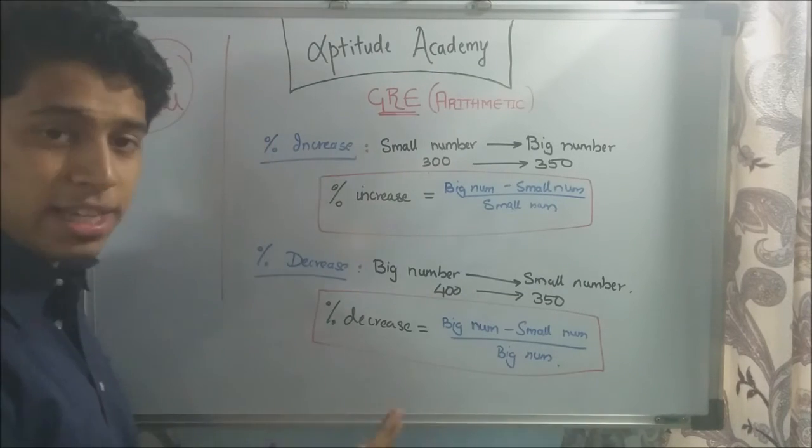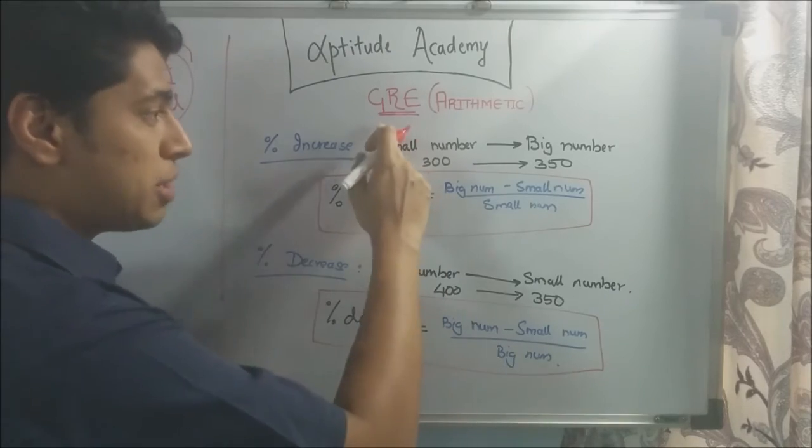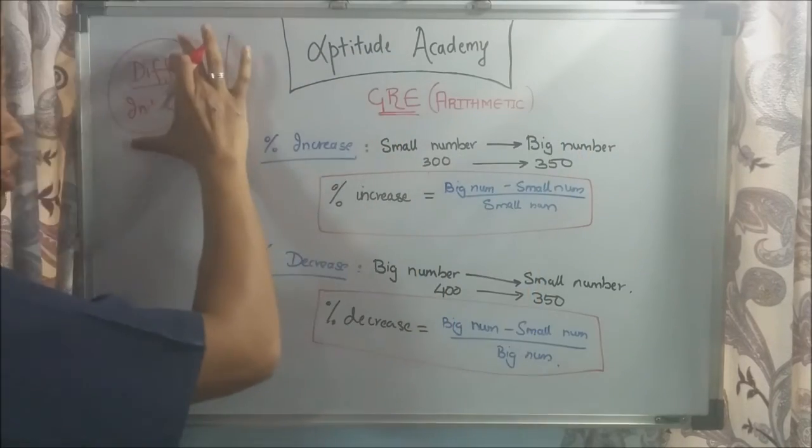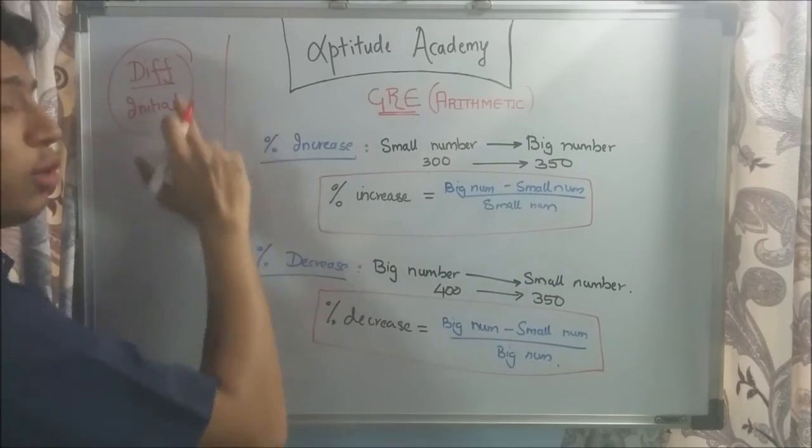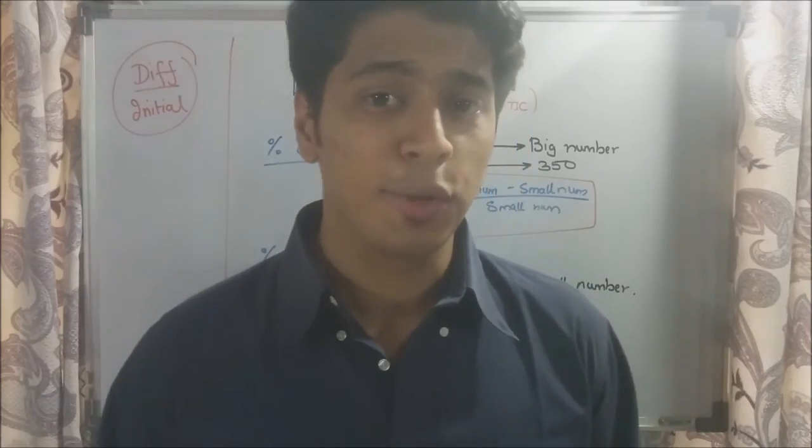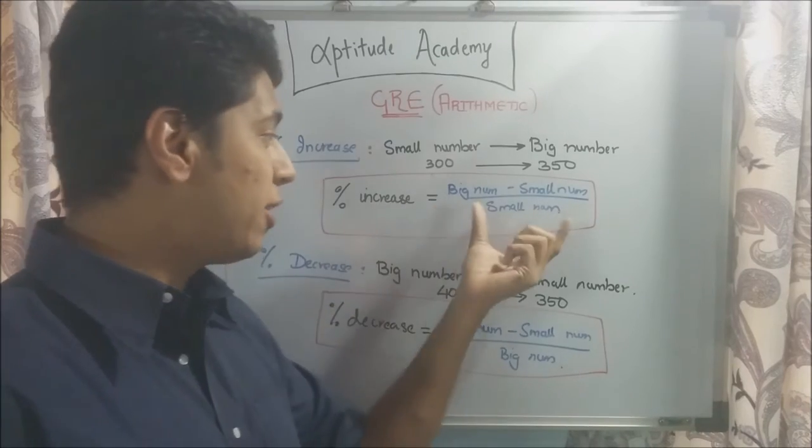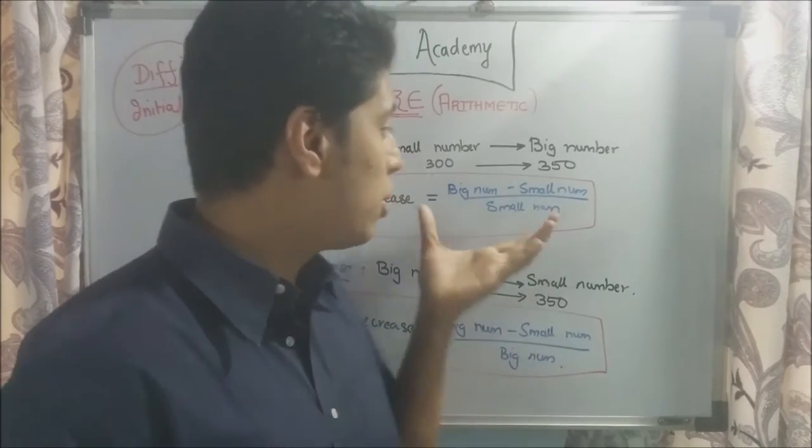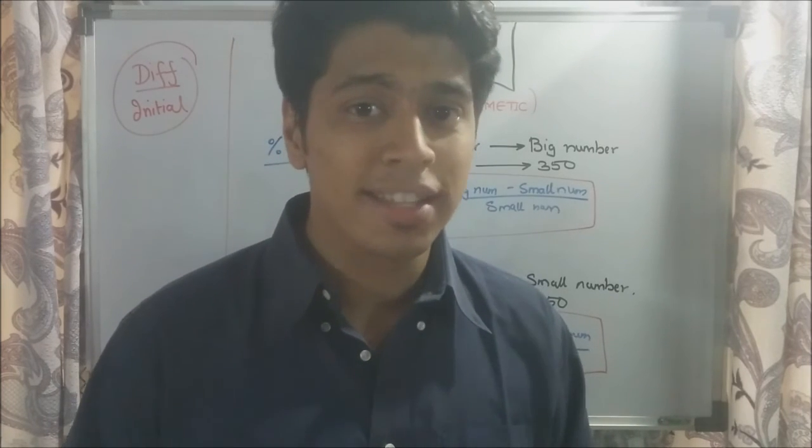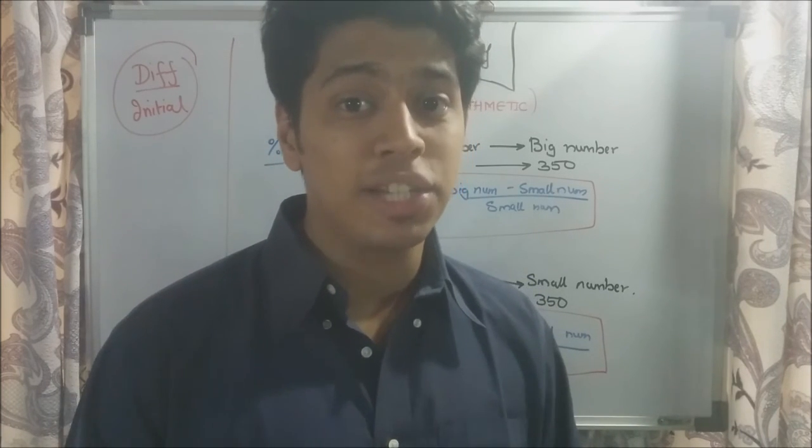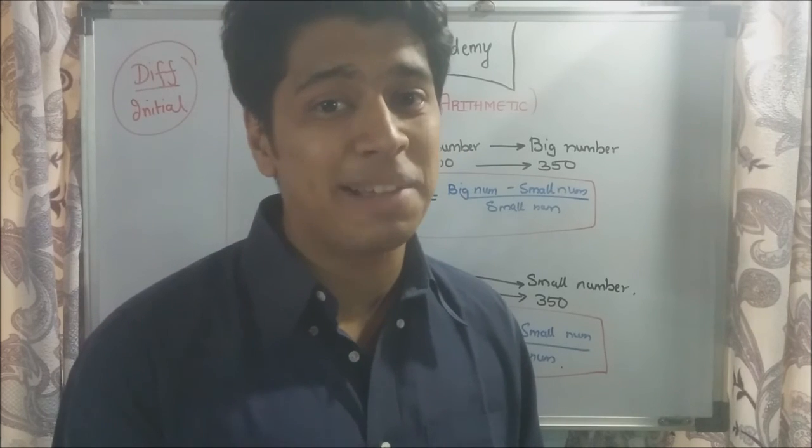Now, whether this is a percentage increase or a decrease, you should be able to understand. If it goes from a small number to a big number, this will be your percentage increase. And if it goes from a big number to a small number, then this will give you your percentage decrease. Something interesting to notice is that both of these are calculated on the initial value. Because after that, it changes to some number. You don't know if it's increasing or it's decreasing. Something similar in profit and loss, where the profit percentage and the loss percentage are calculated on the cost price, not the selling price.